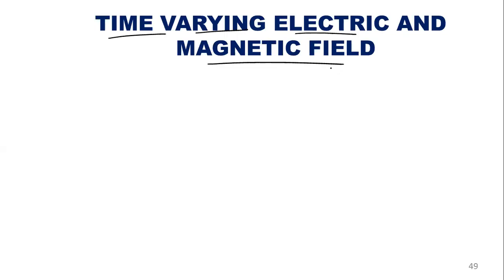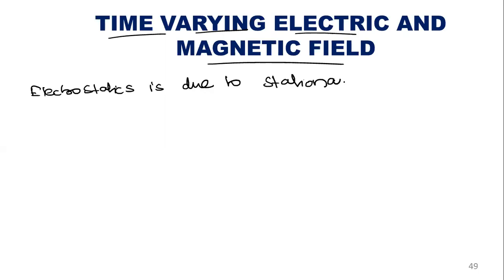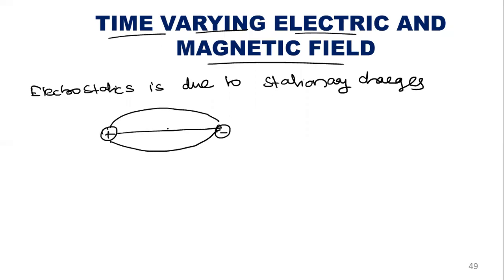What we are talking about is: earlier we studied electrostatics, which is due to stationary charges. For example, if we have a positive charge and a negative charge, there will be a flow of charge from the positive end to the negative end. If there is no negative end, it will be moving towards infinity. This is how the charge flows, and this is an electrostatic field.